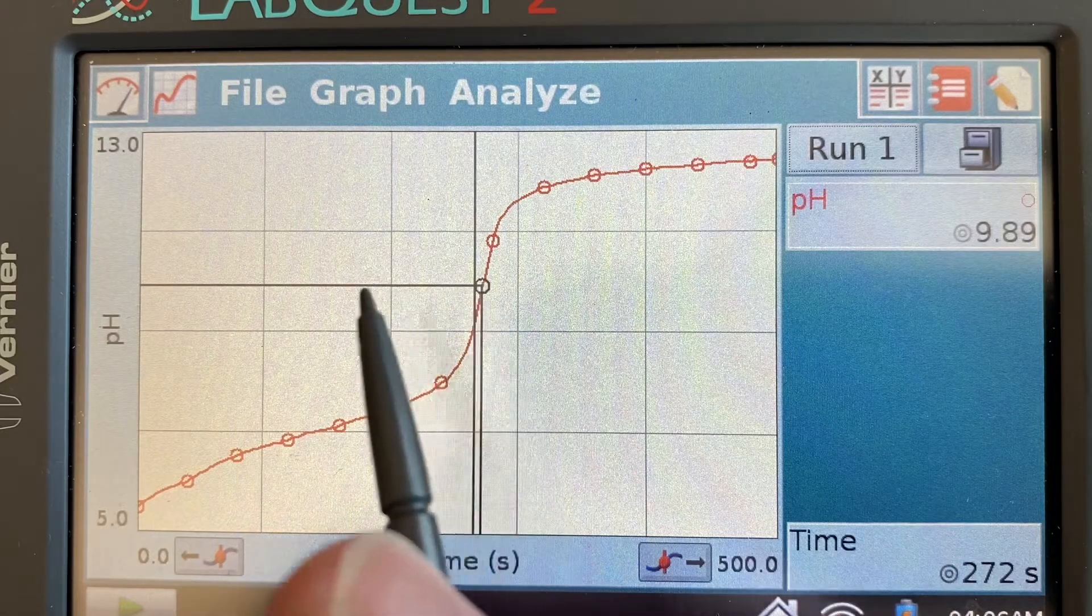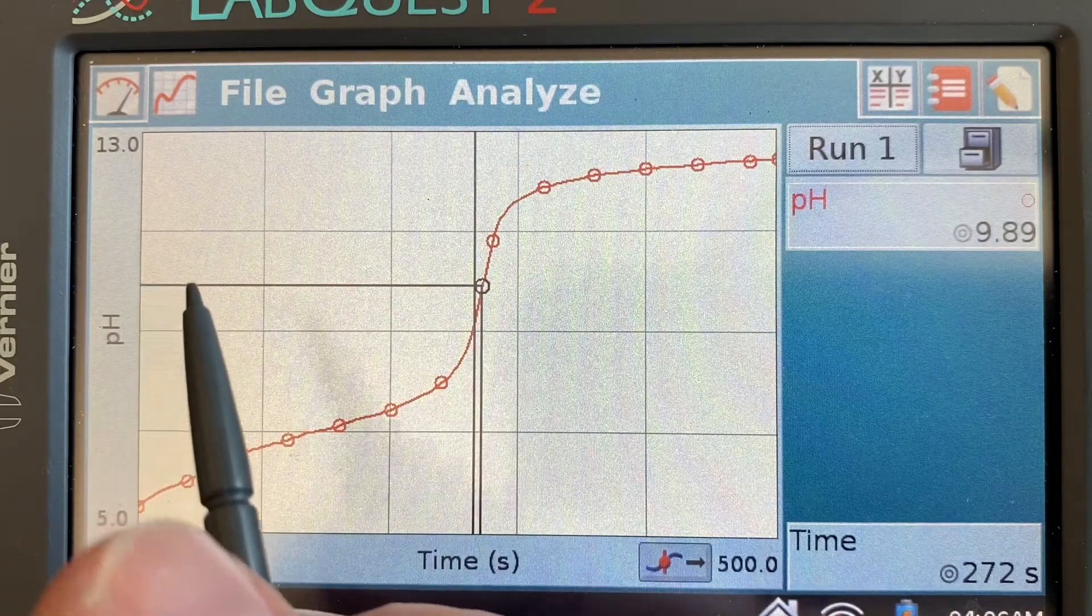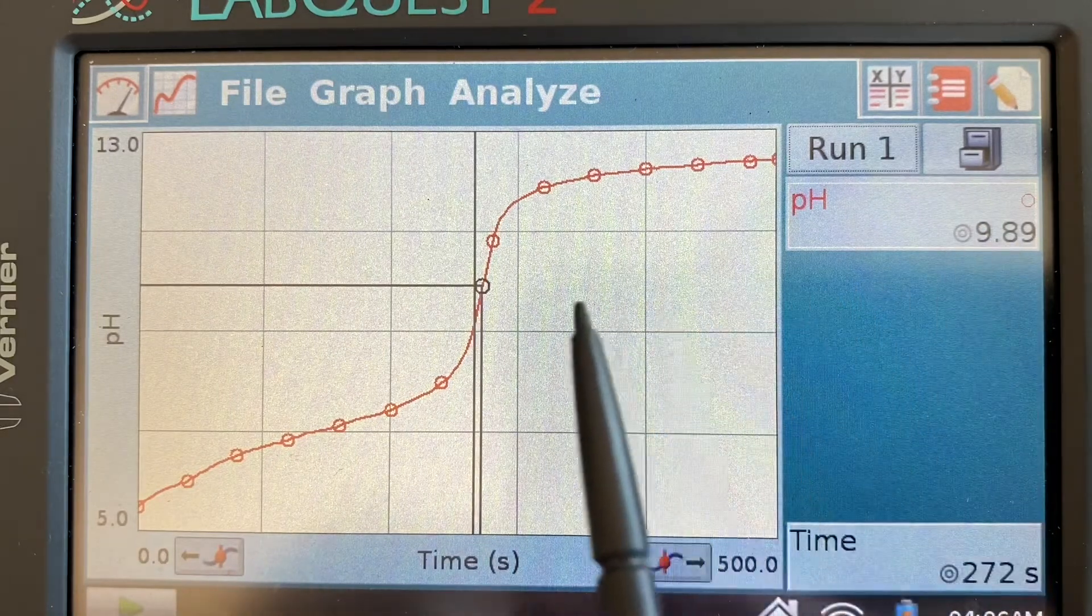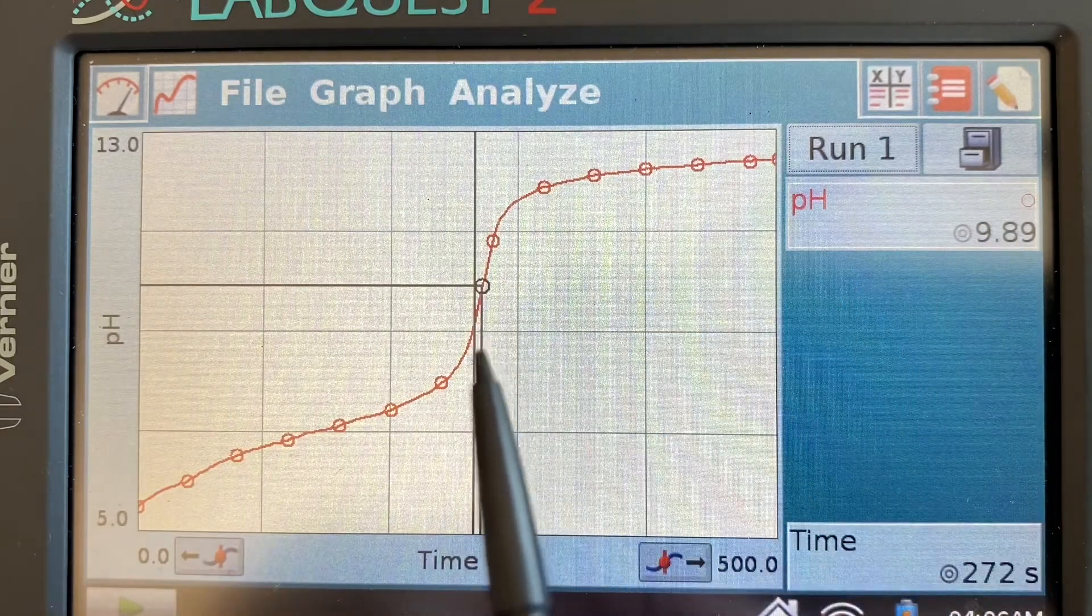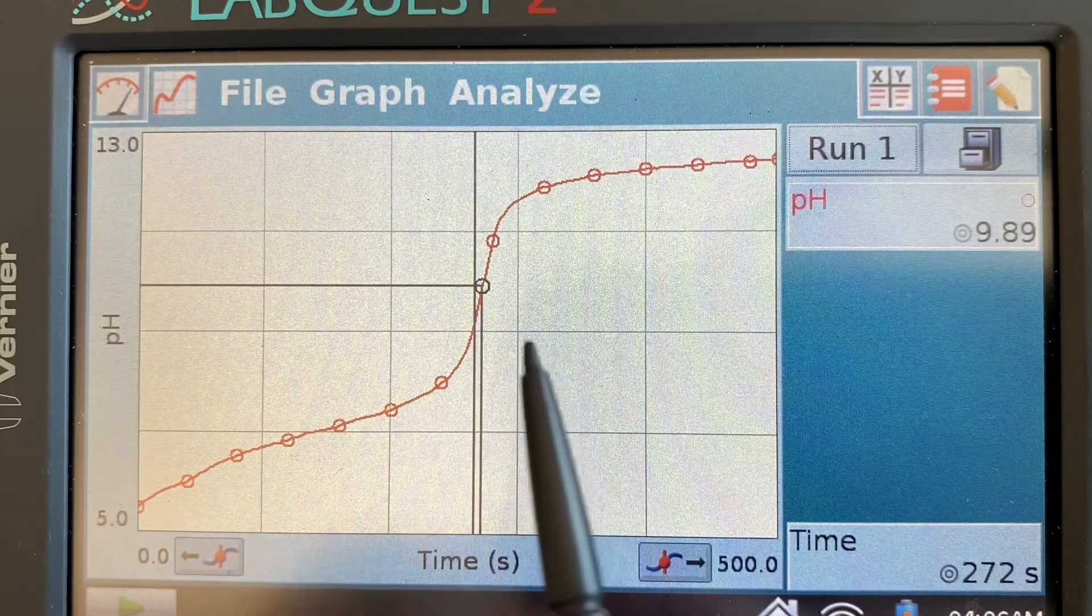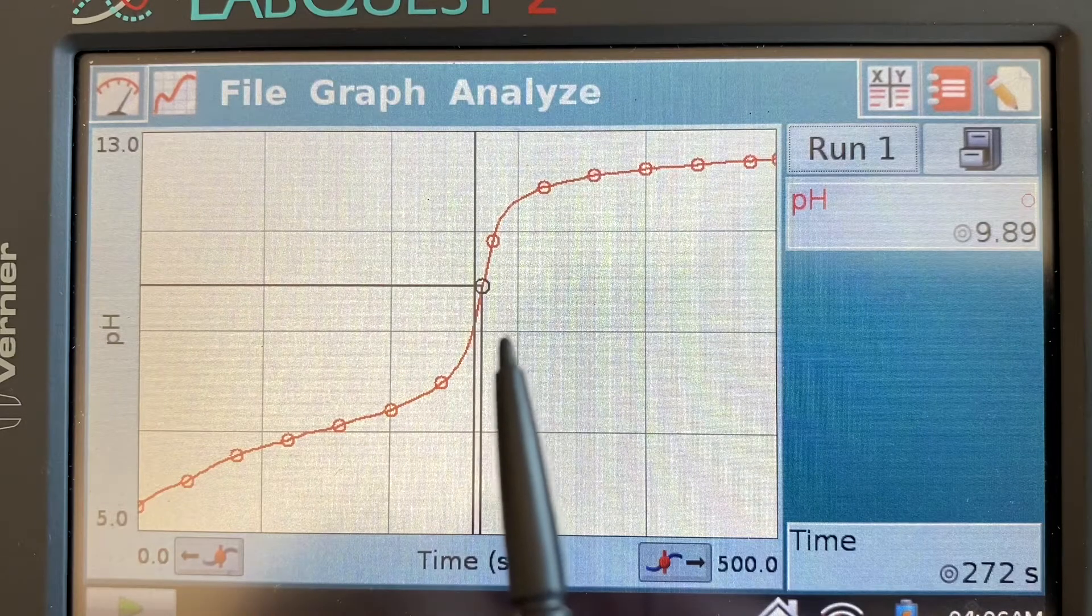Now notice the pH at the equivalence point - I'm estimating here is a pH of 9.89. It's not 7. In fact it's only 7 at the equivalence point when you titrate a strong acid with a strong base or a strong base with a strong acid.